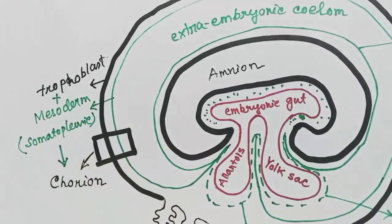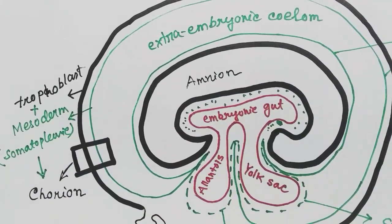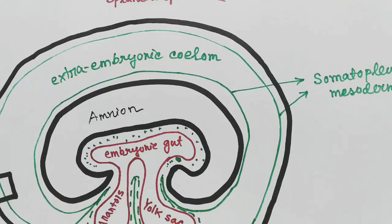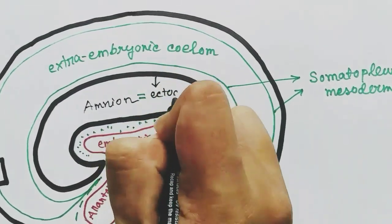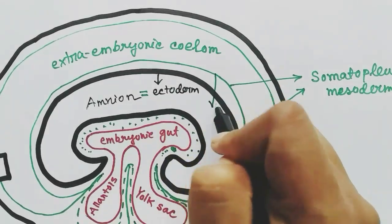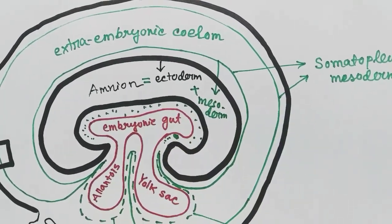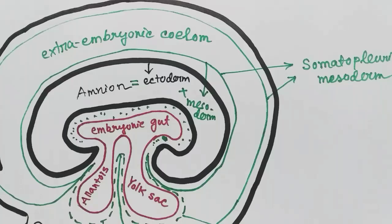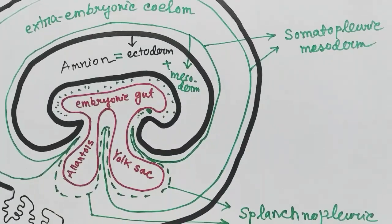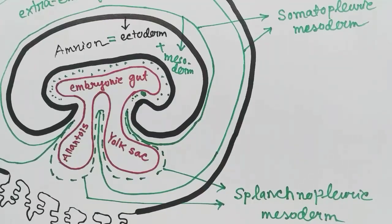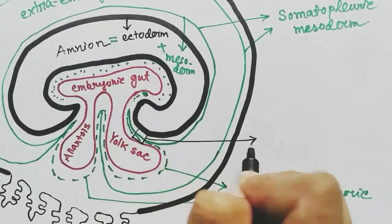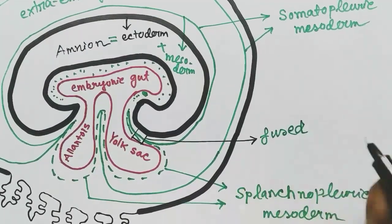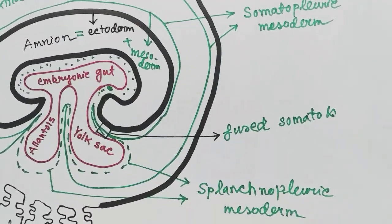The trophoblast cells and somatopleuric mesoderm together form the chorion. The amnion has ectoderm and somatopleuric mesoderm. The yolk sac has the endodermic layer and a fused layer of somatopleuric and splanchnopleuric mesoderm.